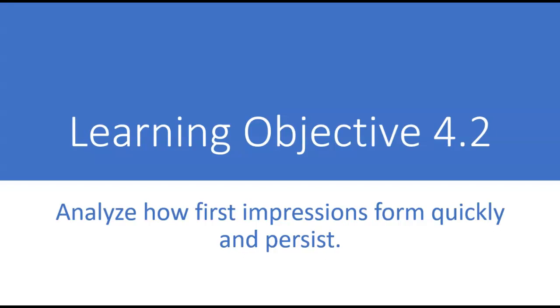This video will cover Learning Objective 4.2 for PSY 235, Social Psychology, and this will also probably be a pretty short video. What we'll be covering in this section of the chapter is the issue of first impressions, and this Learning Objective really relies a lot on the things you learned in Chapter 3 about how we automatically process or use low-effort thinking in order to make quick judgments about what other people are like, what they're thinking, what they're feeling, and what they're most likely to do. So we need to think about how do we form first impressions, and what is the impact of those first impressions on us going forward.